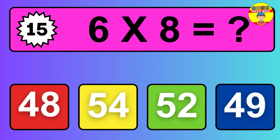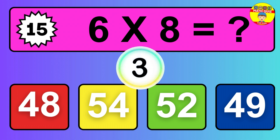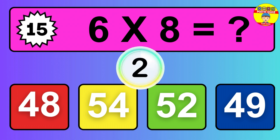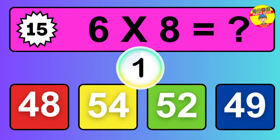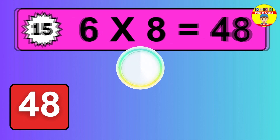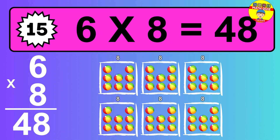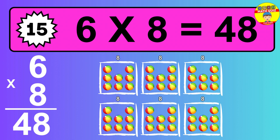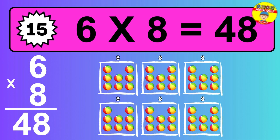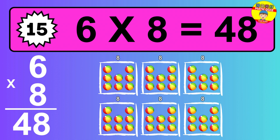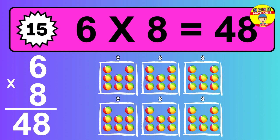Question 15. Six times eight equals what? So the answer is six times eight is 48. To calculate, we have six groups with eight balls each one. So how many balls do we have? 48 balls.